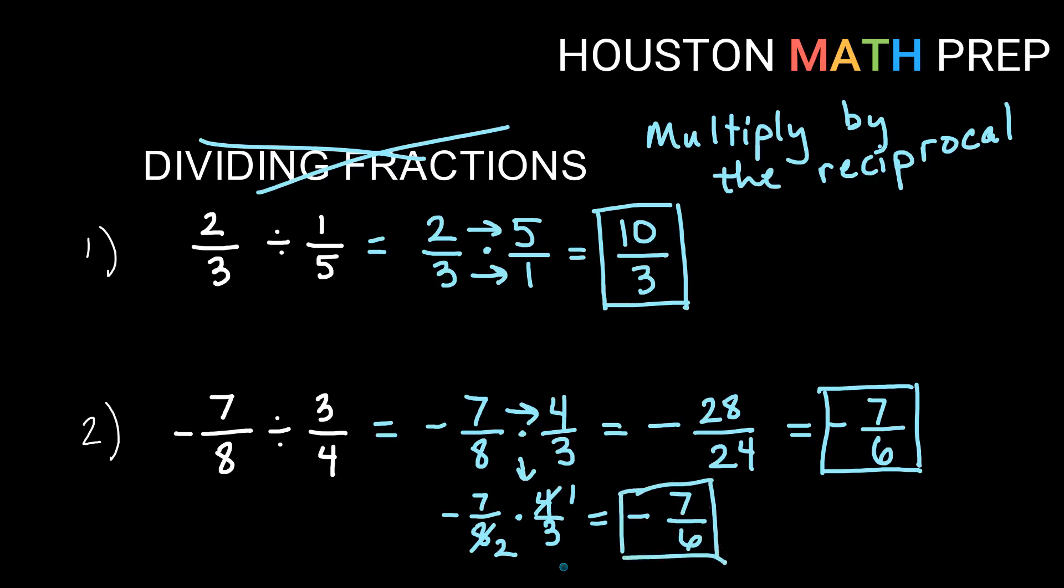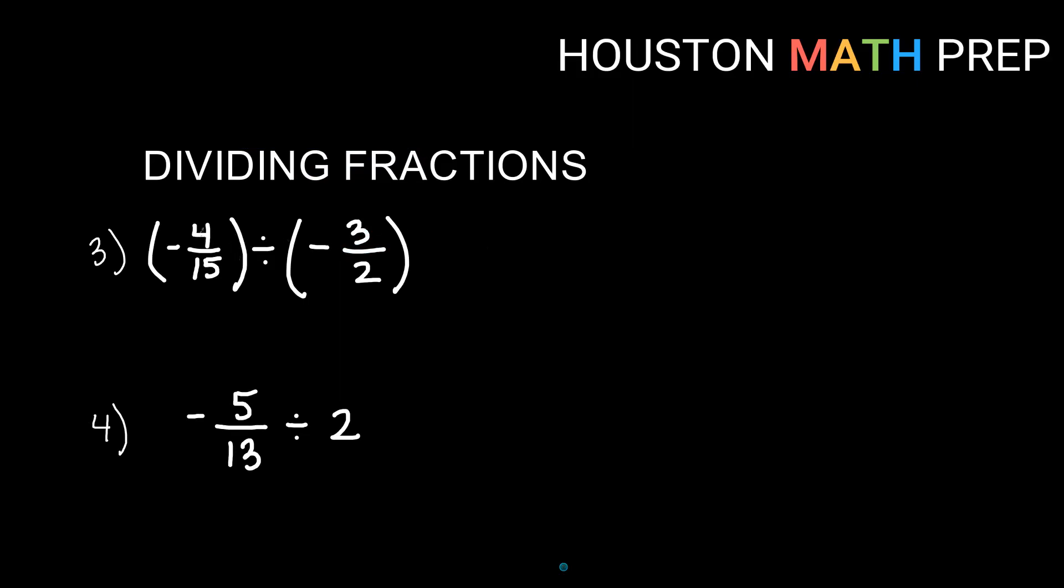Let's go on to some others. So here I have negative four over 15 divided by negative three halves. So we're going to take that as negative four over 15 multiply by negative two over three. Reciprocal, we don't change the sign. Reciprocal just means numerator and denominator swap places, so the negative stays.